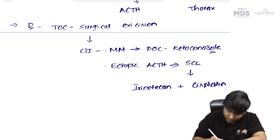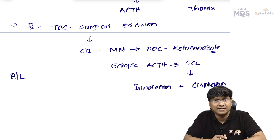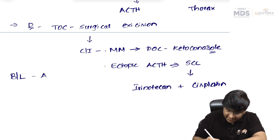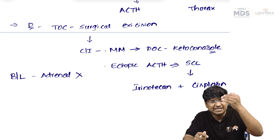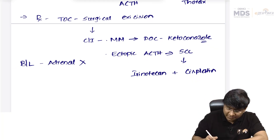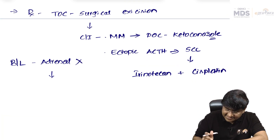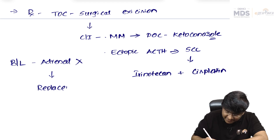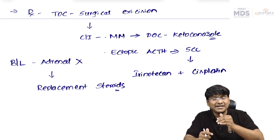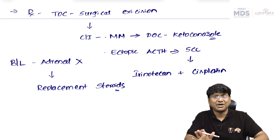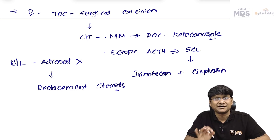If there is bilateral adrenal adenoma or carcinoma requiring bilateral adrenal resection, the individual will develop steroid deficiency. In this scenario, replacement steroids — specifically hydrocortisone — must be given. This concludes the quick recap of Cushing's syndrome.